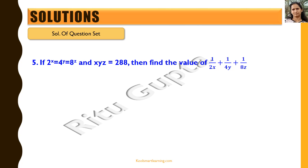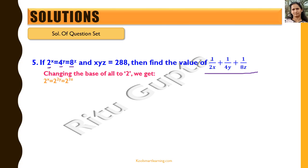Let's now move on to the fifth question. If 2 raised to power x equals 4 raised to power y equals 8 raised to power z, and xyz equals 288, we need to find the value of 1 by 2x plus 1 by 4y plus 1 by 8z. We change all bases to 2: 2 raised to power x equals 2 raised to power 2y equals 2 raised to power 3z. Equating exponents gives x equals 2y equals 3z, so y equals x by 2 and z equals x by 3.